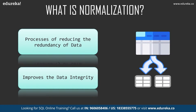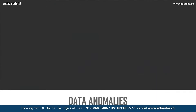Usually the data stored in a database should have a certain logic — huge datasets without any purpose are completely wasteful. It's like having an abundant resource without any application; the data should make some logical sense. Normalization came into existence because of the problems that occurred with data, and these are known as data anomalies.